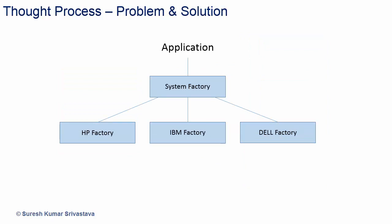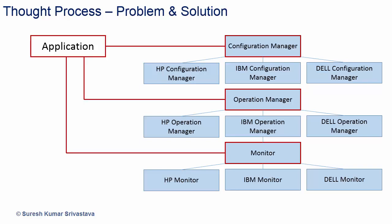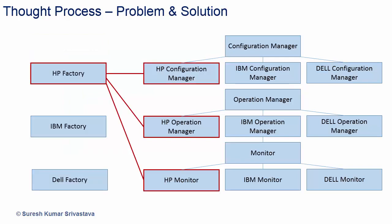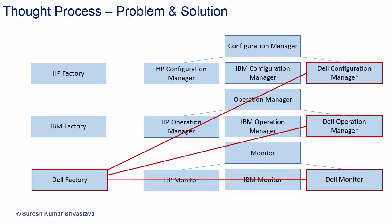So we will have an interface called System Factory. HP Factory, IBM Factory, and Dell Factory will be inherited from System Factory, and now the application will use System Factory. We will also have interfaces for Configuration Manager, Operation Manager, and Monitor. HP, IBM, and Dell variants of each will be inherited from their respective interfaces. HP Factory creates HP Configuration Manager, HP Operation Manager, and HP Monitor. IBM Factory creates its family, and Dell Factory creates its family. The application uses the interfaces — Configuration Manager, Operation Manager, and Monitor.